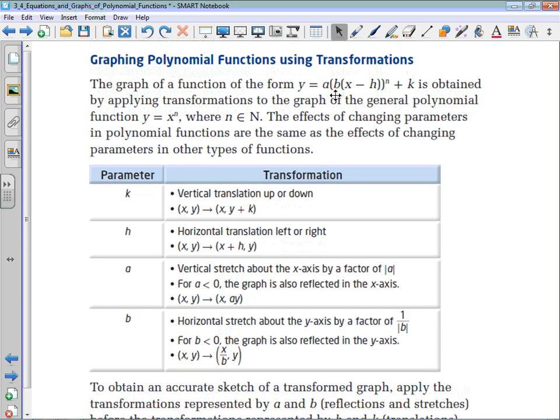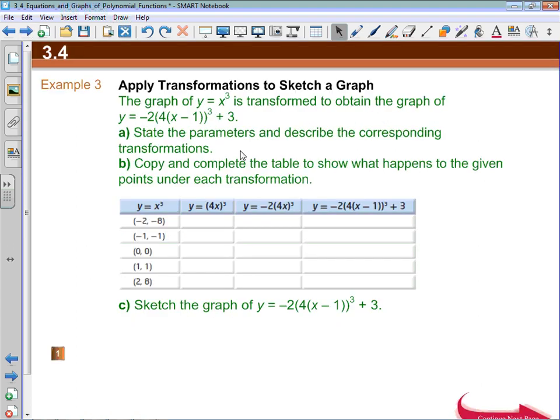What's really important is whatever degree is on that B times X minus H, that's the base function that we're going to look at. So if we had Y equals 2 times X minus 5 to the power of 6, we would look at Y equals X to the 6 as our base function. And that's why we can do this with polynomials because we have that knowledge of what our basic function looks like. Typically they tell you what the basic function should be, but they don't have to.